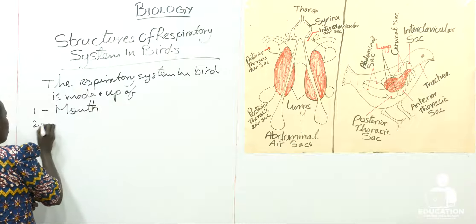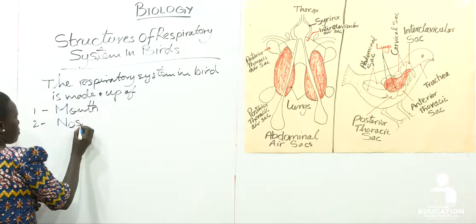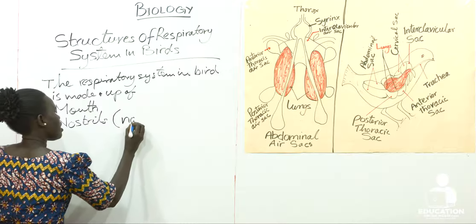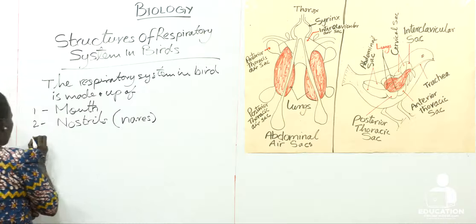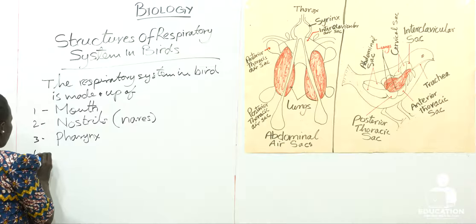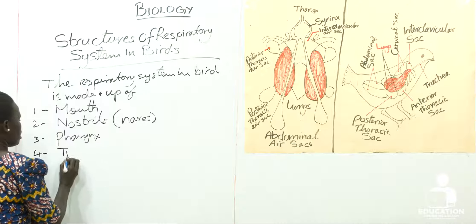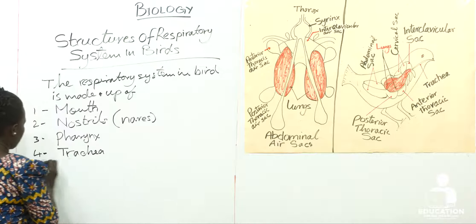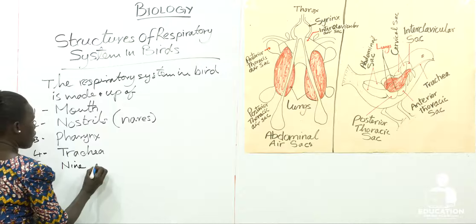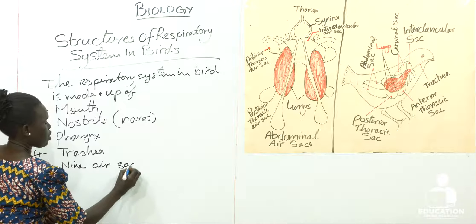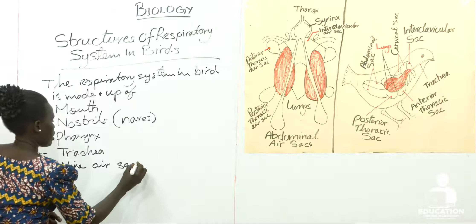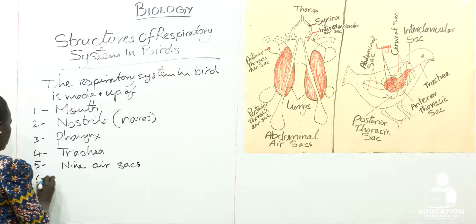The respiratory system in birds is made up of: one, mouth; two, nostrils, which are also called nares; three, pharynx; four, trachea; five, nine air sacs; and lastly, lungs.